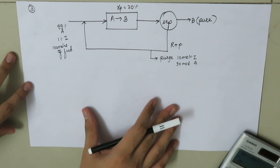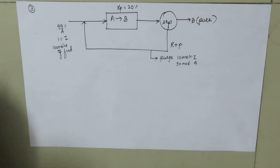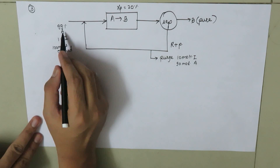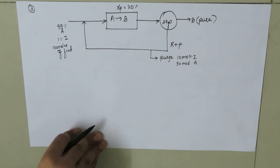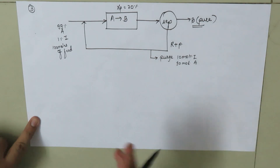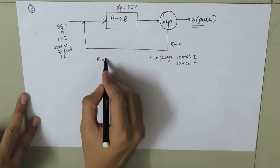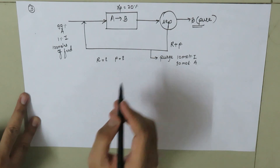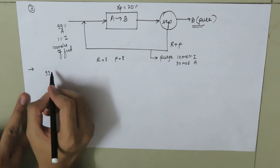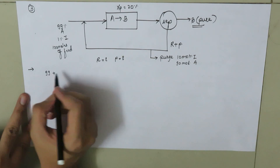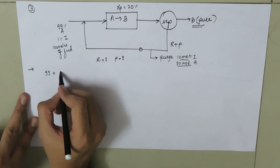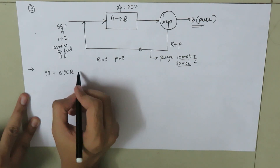Now let's take the third example, which includes a purge stream. The purge stream has a composition of 10 mole percent inerts and 90 mole percent A. The feed has 99% A and 1% inerts. The per-pass conversion of the reactor is 20%. We have a separator producing pure B. We need to find the recycle ratio R and the purge flow P. The moles of A entering the reactor are 99 plus 0.90 times R.